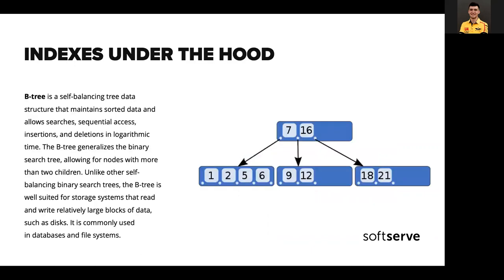In further examples, I will represent indexes as tables with columns and rows just to simplify things. But if you are familiar with algorithms and data structures, it won't be a big deal to convert these examples to an appropriate view. MongoDB stores indexes in a B-tree structure, and knowing this, you can achieve a better understanding of how you can utilize indexes properly — and how you can't. We will talk about it a little bit later in the scope of best practices.